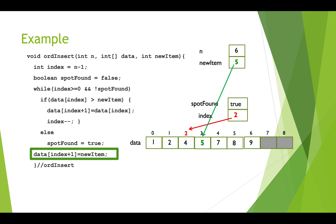We've exited the while loop. Now we say data at index plus one — index is pointing at 2, and that slot previously held 7 but we'd already copied it over, so it's effectively unused. We place our new item into that slot, and it's exactly where we want it to be: the 5 is now sitting between the 4 and the 7.